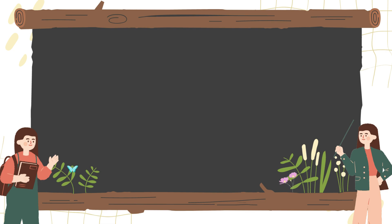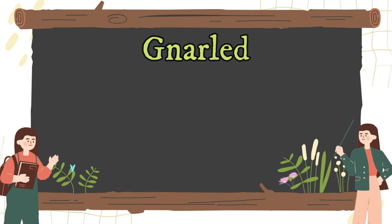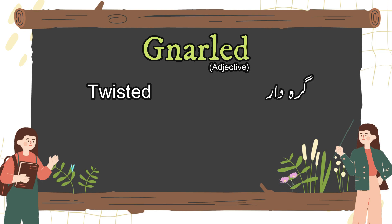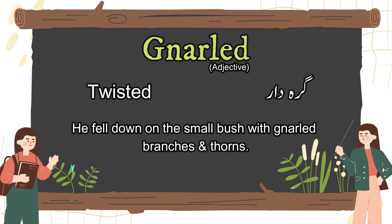Aaj ka humara fifth and last word hai nulled. Ye ek adjective hai. Iska English meaning hai twisted. Let's use this word in a sentence: he fell down on the small bush with naal branches and thorns.